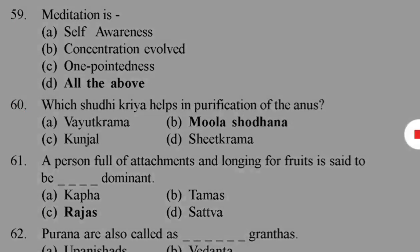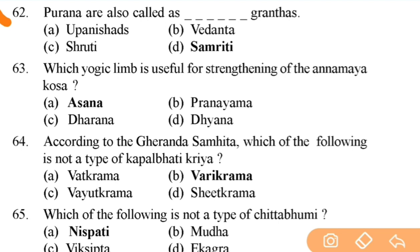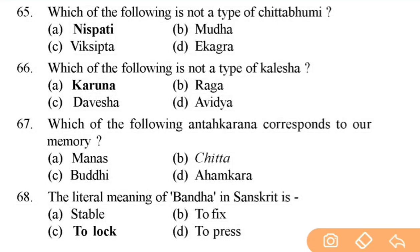Puranas are also called Smriti Granths. Next: which yogic kriya is useful for strengthening Annamaya Kosha? Right answer is A — asanas. Next: according to Gherand Samhita, which of the following is not a type of Kapalabhati Kriya? Right answer is B.